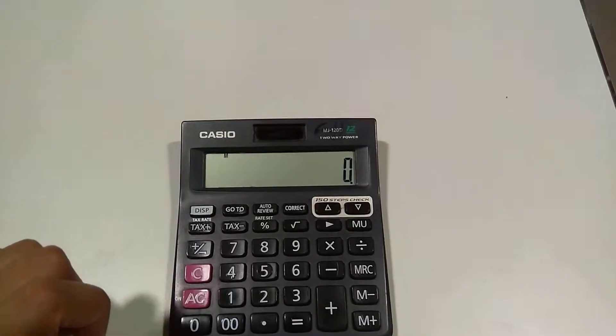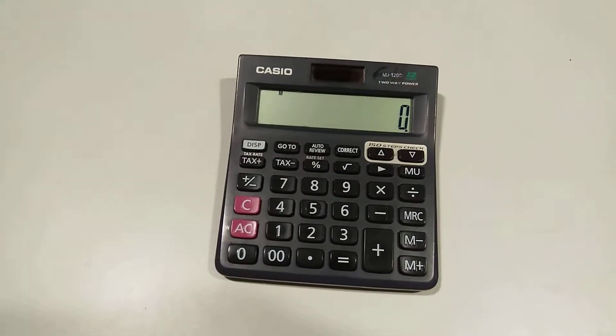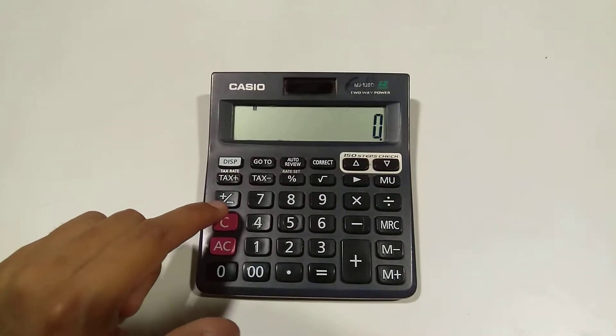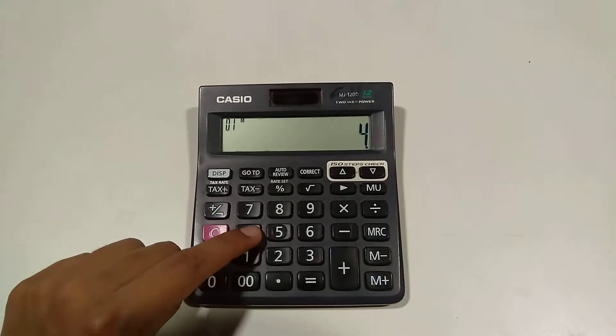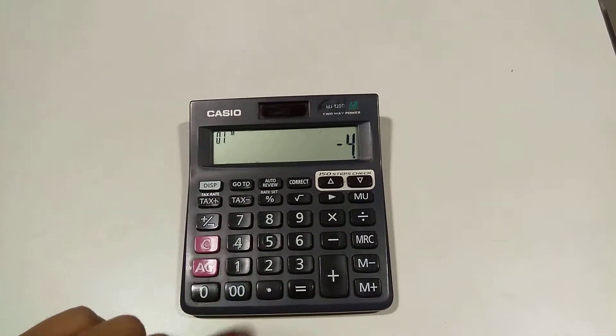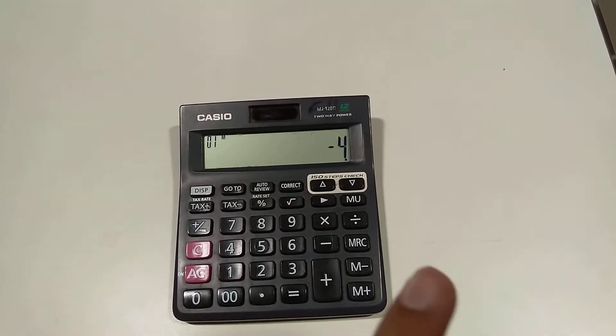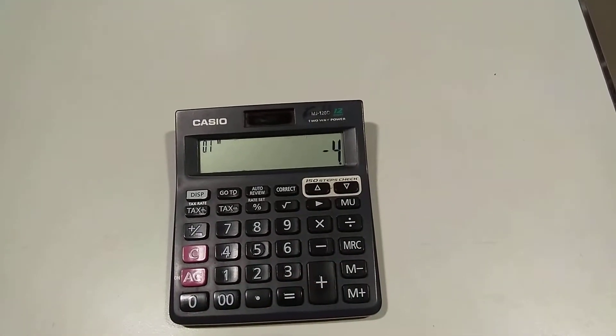To do it correctly, what you have to do is start from 4, then you have to press this button, plus over minus. You can see this 4 value is now starting from minus, so the value is minus 4.